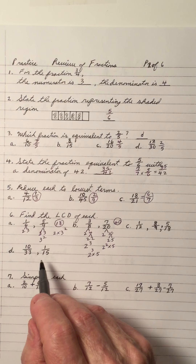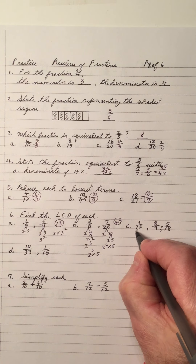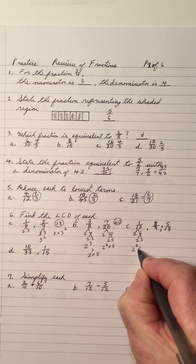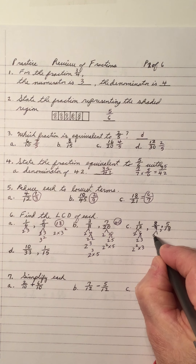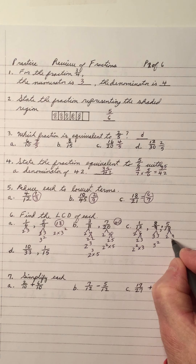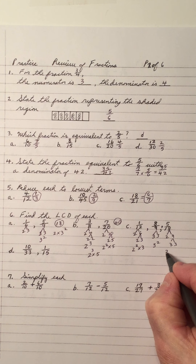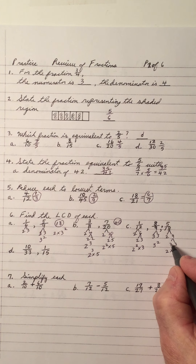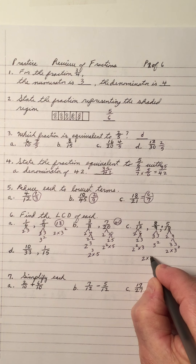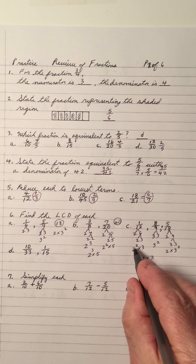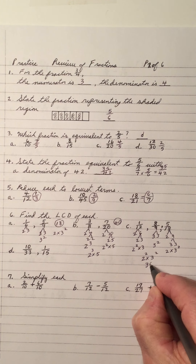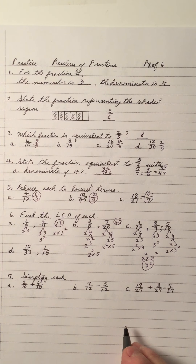Remember, the LCD is the same as the least common multiple. For denominators 12, 9, and 18: 12 is 2 squared times 3; 9 is 3 squared; 18 is 2 times 3 squared. Take one of each factor with the highest power: highest power of 2 is 2, highest power of 3 is 2. So 4 times 9 equals 36 — the LCD is 36.